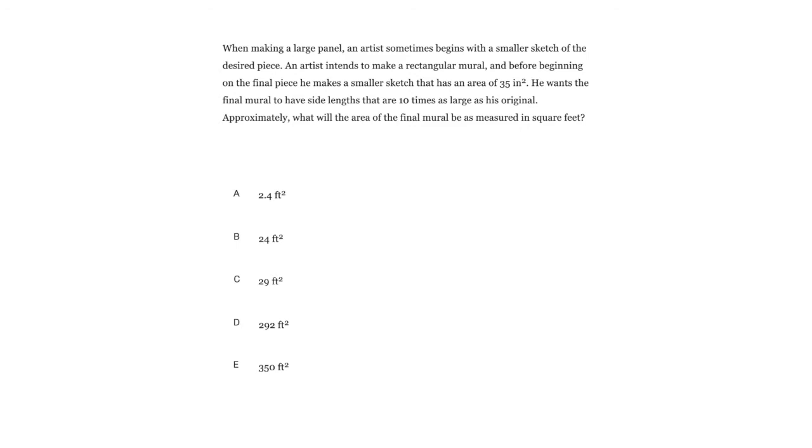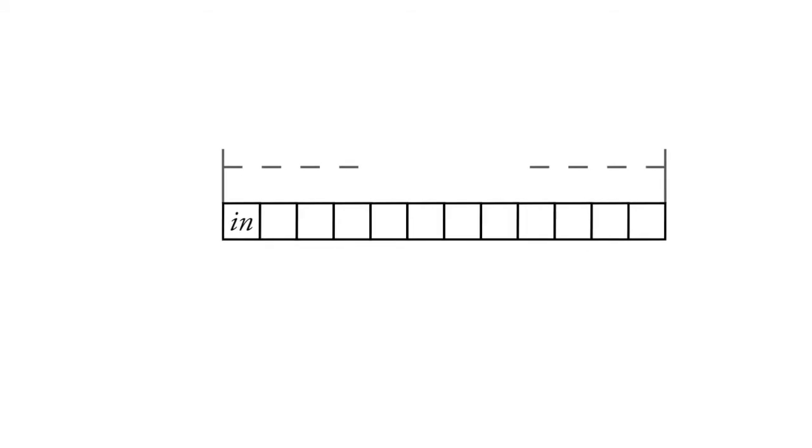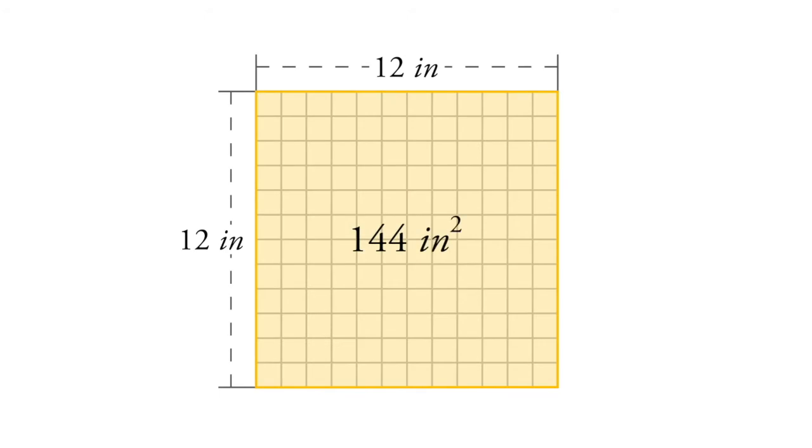This is a really tricky one because you might think there are 12 square inches in a square foot, but there's not. Because if we take a square inch and we just go make 12 of them, then we have one foot by an inch. So we have to take 12 rows of those, so we wind up with 144 square inches.